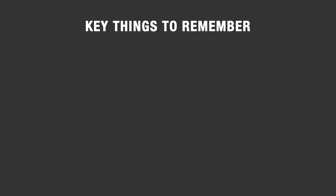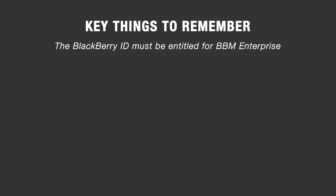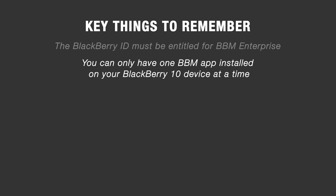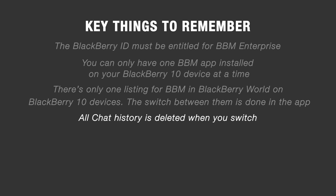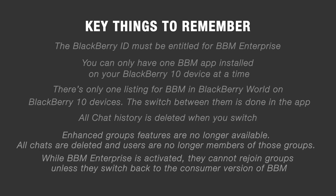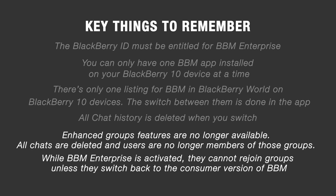Let's review the important things you need to remember. The BlackBerry ID must be entitled for BBM Enterprise. You can only have one BBM app installed on your BlackBerry 10 device at a time. BBM Consumer and BBM Enterprise are separate apps but use the same application identifier to integrate with core OS features. There's only one listing for BBM in BlackBerry World on BlackBerry 10 devices, and the switch between them is done in the app. All chat history is deleted when you switch. For groups, the enhanced group features — including calendar and tasks — are no longer available. After the switch, all previous group chats are deleted and users are no longer members of those groups. While BBM Enterprise is activated, they cannot rejoin the groups unless they switch back to the Consumer version.